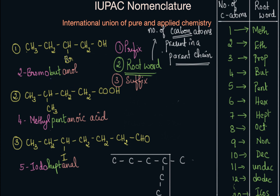Now let's go back to our earlier examples. All the root words are represented in the same color. If you count the total number of carbon atoms in this chain, you see one, two, three, four — there are four carbon atoms. So what is the root word for four carbon atoms? It is but. That's why we have the name but here.